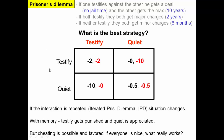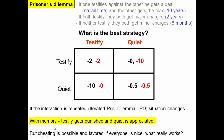If the interaction is repeated — called the iterated Prisoner's Dilemma, or IPD — the situation changes. If individuals have memories and remember what happened last time, then testifying gets punished. If one person testifies and the other was quiet, the quiet individual may realize that both could do better by both staying quiet. So with memory and repeated interactions, testifying generally gets punished and being quiet is appreciated, allowing the system to move toward mutual cooperation.